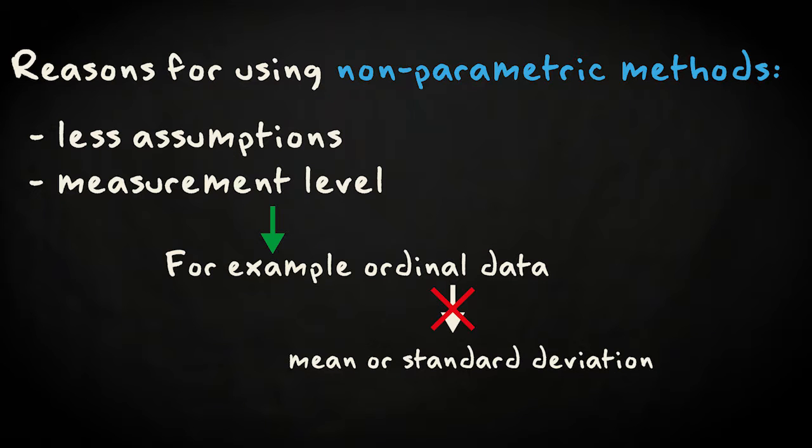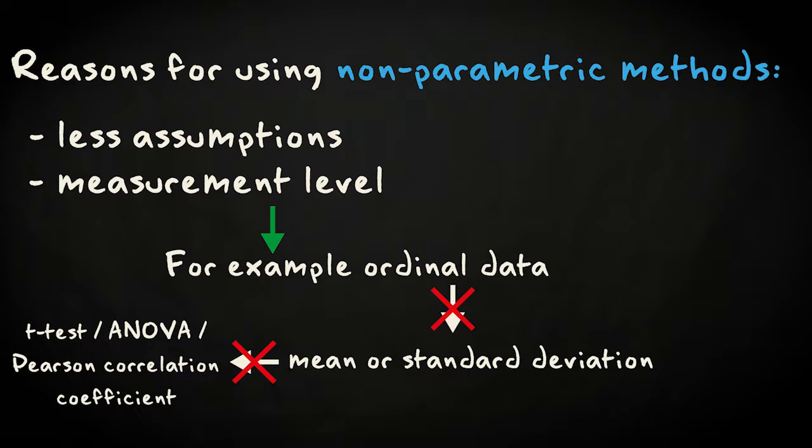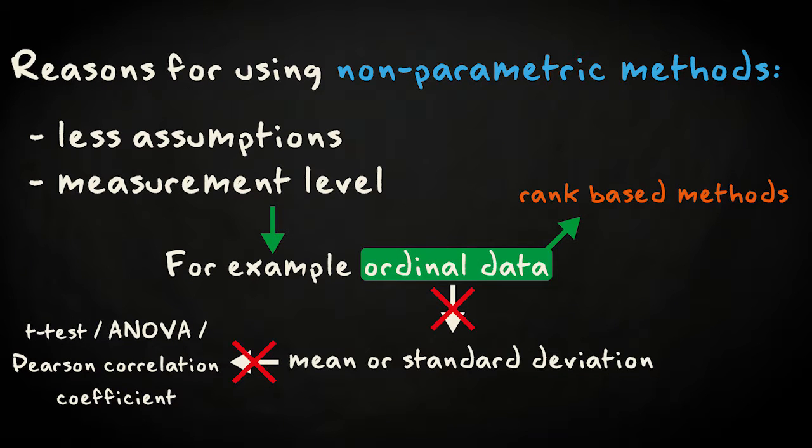So for that type of data, you cannot apply a t-test, an ANOVA, or calculate the Pearson correlation coefficient. Fortunately there are many non-parametric methods that don't work with numerical data, but are specifically designed for ordinal data instead. The so-called rank-based methods.